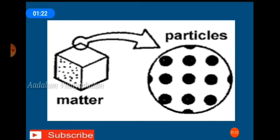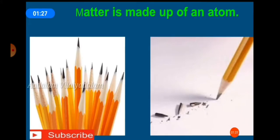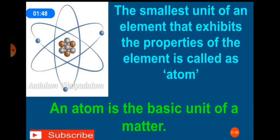For example, graphite used in a pencil is a solid matter. It is made up of the element called carbon. If we break the graphite into pieces, each small piece exhibits the same properties of the element. So, what is an atom? The smallest unit of an element that exhibits the properties of the element is called an atom.